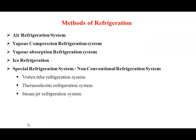Methods of refrigeration include: air refrigeration system, vapor compression refrigeration system, vapor absorption refrigeration system, and ice refrigeration. There are also special non-conventional refrigeration systems such as vortex tube refrigeration, thermoelectric refrigeration system, and steam jet refrigeration system.